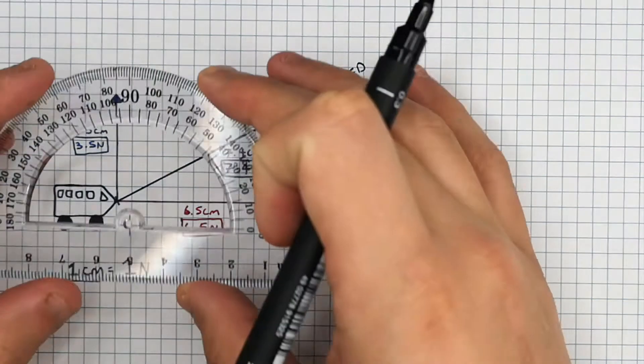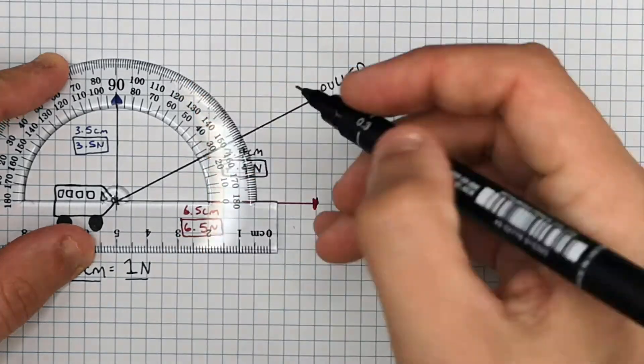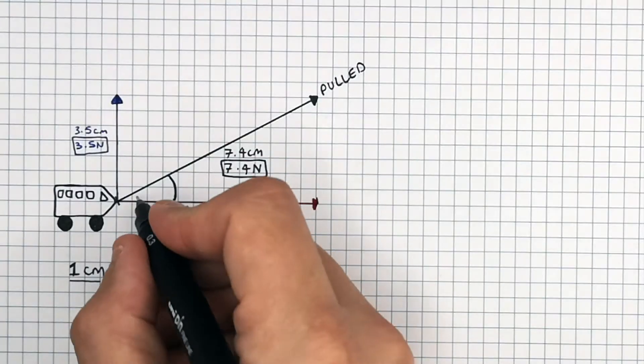You can also measure the direction that the magnitude of the single component is acting in using a protractor, which is 27 degrees.